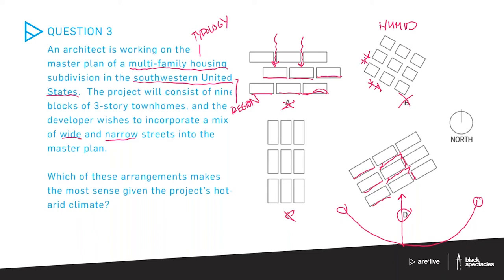Architecture is about making informed decisions and choosing the best option — often there's no perfect solution. Questions on the ARE will ask which arrangement is most appropriate for a given scenario. If you've been reading through ARE resources, you'll recognize some of these types of diagrams from the book Sun, Wind and Light, where you can read more about what types of massings make sense in different geographies. Omar, I think you had something to do with that book — do you want to talk about that?